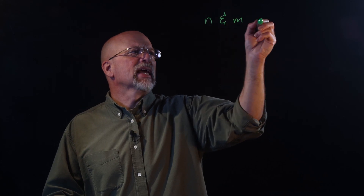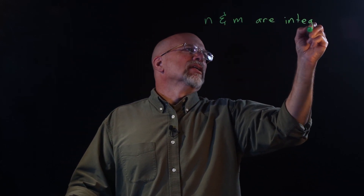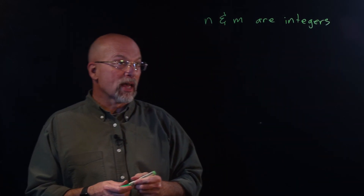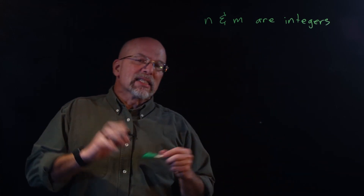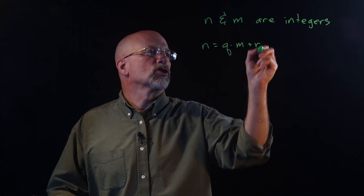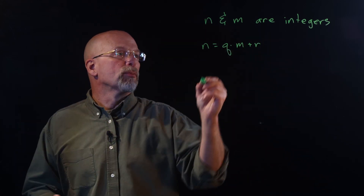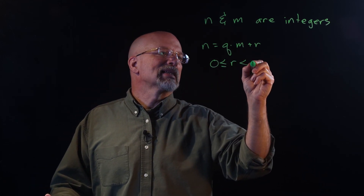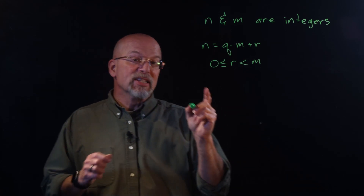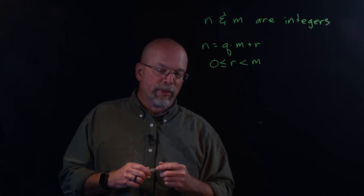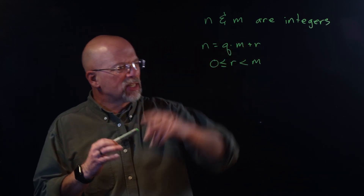We are going to assume that we have two integers, n and m. If both of them are defined, we can say that there is an expression: n is equal to q times m plus r. Furthermore, if we define r as being greater than or equal to zero but less than m, there is exactly one q and one r that satisfies that expression. The rest of this lesson is really based on this one equation.